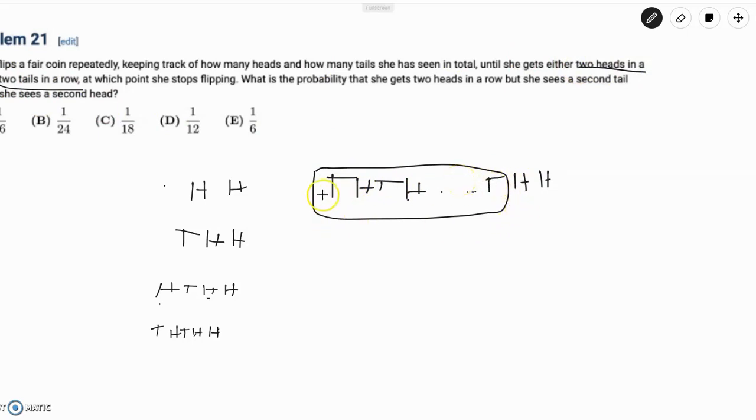And in addition, the sequence has to begin with tails. Because if it begins with heads, then she's going to go HTHTH, and she's going to see her second head before her second tail. So, we don't want that, and we want it to be THTH, because that way, she can see the second tail before the second head.